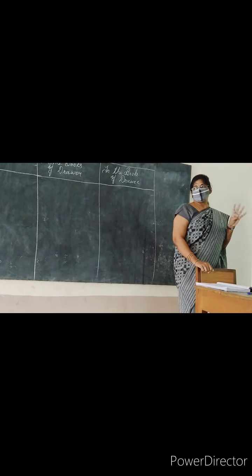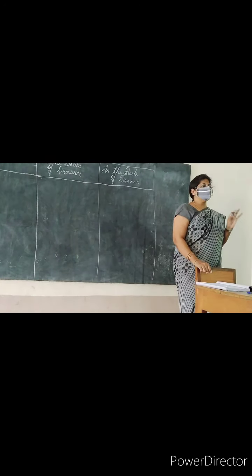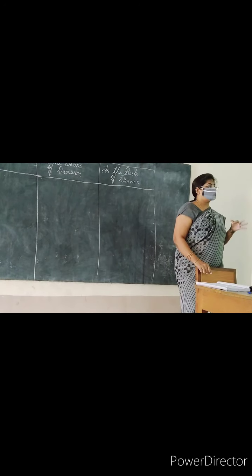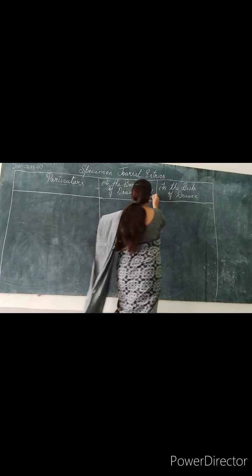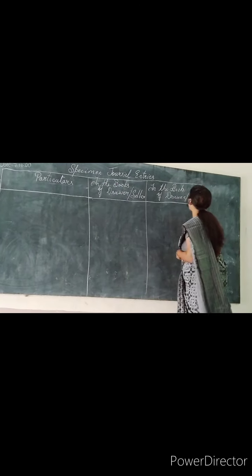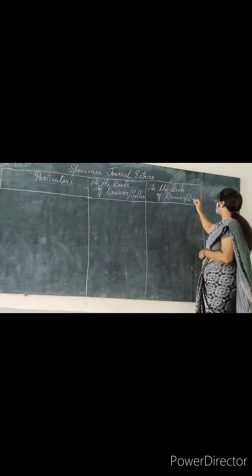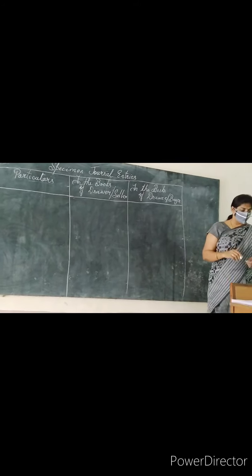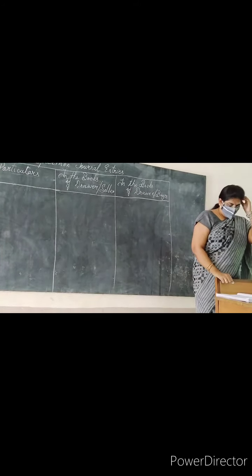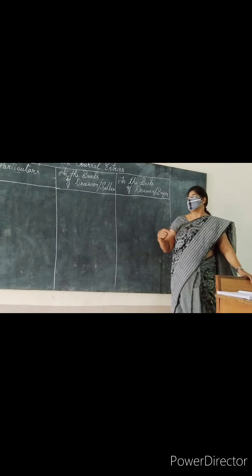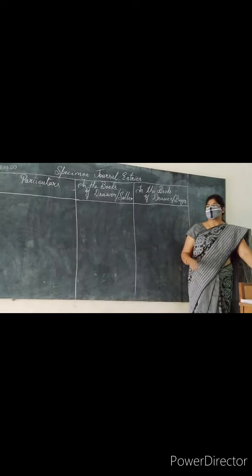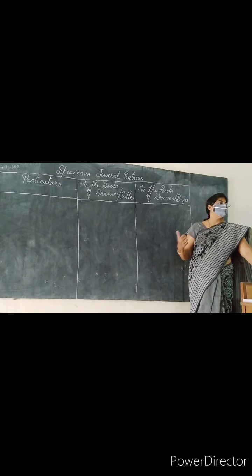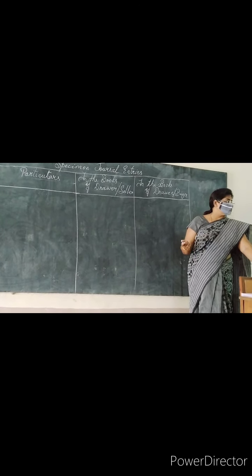You have 4 options here. First one, when the bill is with the drawer — drawer means seller. You can call drawer as seller too, and drawee means none other than the buyer. Second, when the bill is with the bank, that is when it gets discounted to the bank.